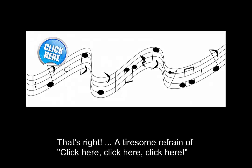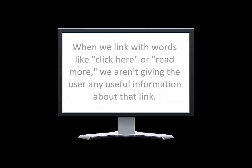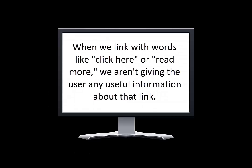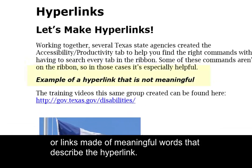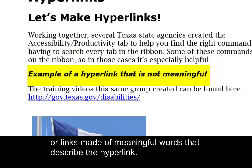A tiresome refrain of 'click here, click here.' When we link with words like 'click here' or 'read more,' we aren't giving the user any useful information about that link, and it's not accessible. To make the links accessible, use contextual links — links made of meaningful words that describe the hyperlink.